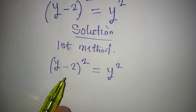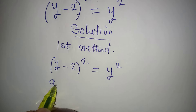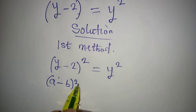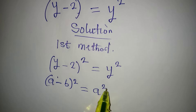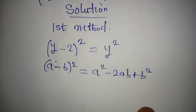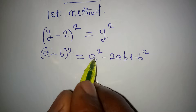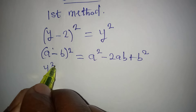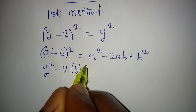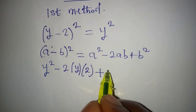To deal with this, I can expand the left-hand side. Remember, if you have (a minus b) squared, this is the same thing as a squared minus 2ab plus b squared. Now my a is y and b is 2, so in place of a squared I will have y squared, minus 2 times a, which is y, and then b is 2.